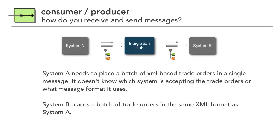How do we send and receive messages? This is a simple consumer and producer. Our scenario, which will follow us for all five patterns: we have two systems, System A and System B. System A needs to place a batch of XML-based trade orders — stock orders to buy, say, Apple stock — in a single message called a basket of trades. It doesn't know which system is accepting the trade or what message format it uses; it simply sends these off to a queue. System B also receives a batch of trade orders in the same XML format as System A.